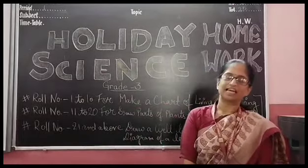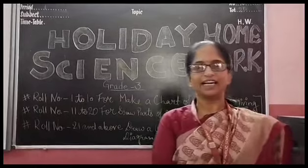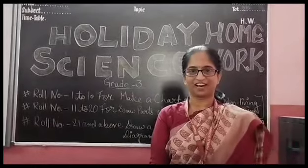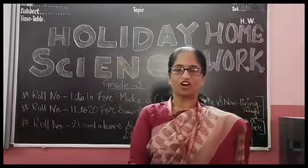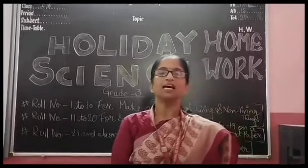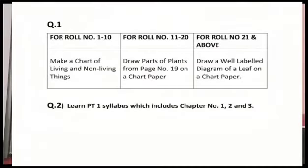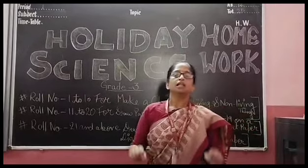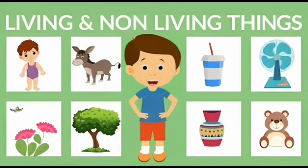As you all know, your holidays are going to start now. So here I present your grade 3 science homework. This is according to row number 1 to 10. You have to make a chart of your living and non-living things. You have to paste the pictures of living things and non-living things.